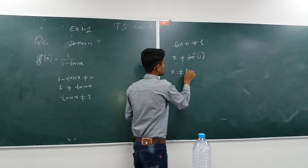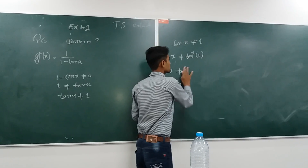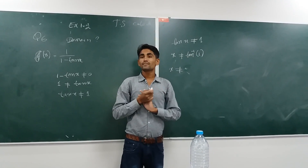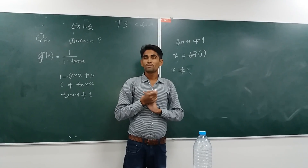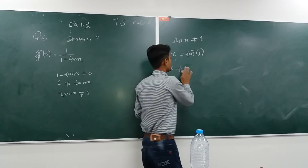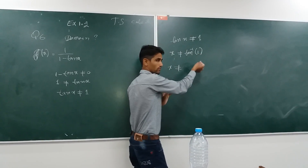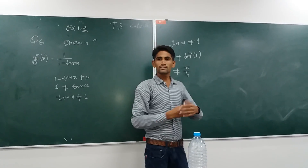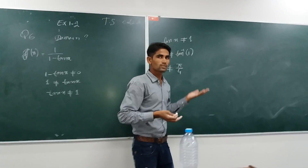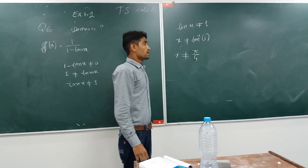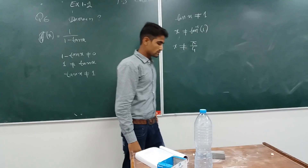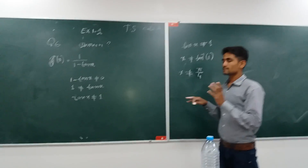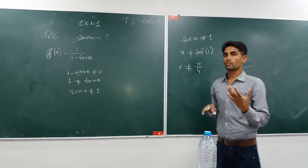So, x does not equal to tan inverse of 1. You know that tan inverse of 1 is equal to pi by 4. So, it is clear from this problem that x does not equal to pi by 4. This is the domain.